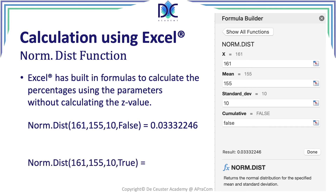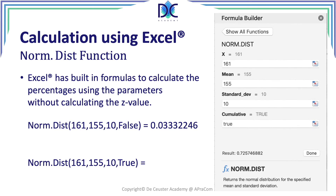Now we look at NORM.DIST again, but we change the parameter from false to true. Now we get the cumulative distribution, which gives us 0.7257, or 72.57%. It's very easy to enter those data in Excel using the formula. Once you know it, it's easy to copy-paste, and when you want to build the formula for the first time, you can use the formula builder, which also gives you explanations on how to work with it.